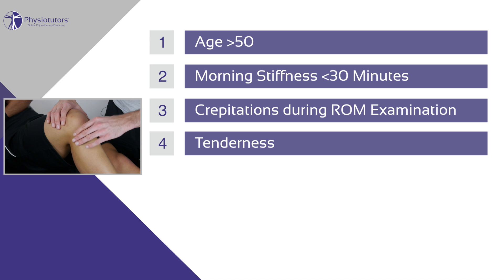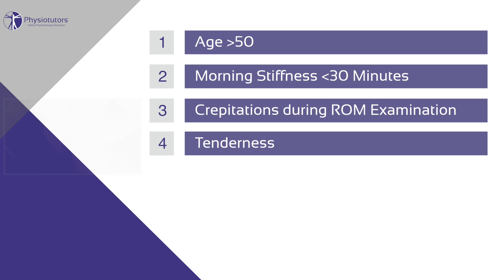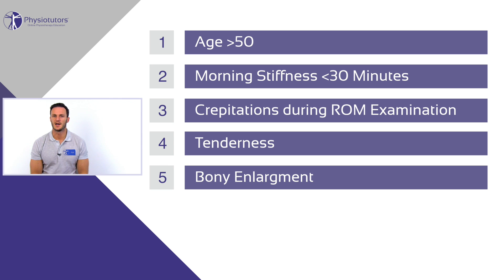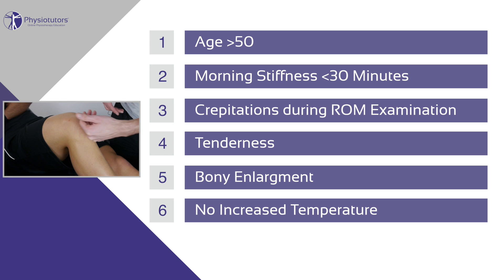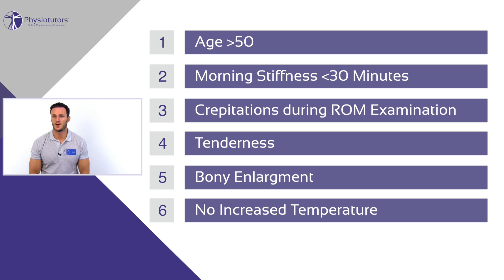4. Tenderness upon palpation of bony margins. This is due to the fact that the subchondral bone, in contrast to the cartilage itself, is highly innervated and might be sensitive upon palpation. 5. Bony enlargement of the knee joint due to the formation of osteophytes. And 6. No increase of temperature, which again is commonly associated with an active inflammatory process, like in rheumatoid arthritis.